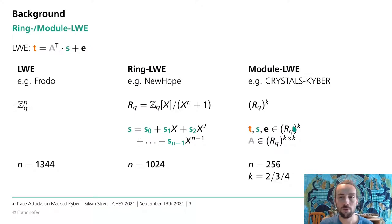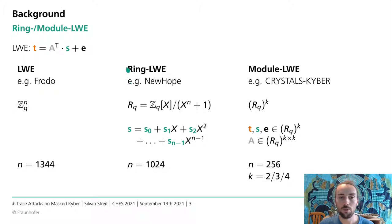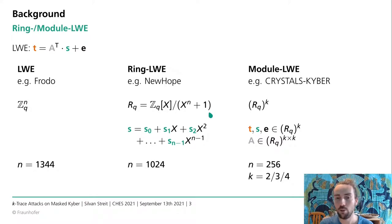This problem is used in a number of schemes — to highlight three: Frodo uses the ring over the integers modulus Q with a dimension N over 1000. New Hope uses ring LWE, where the ring is a polynomial ring, which allows for faster computation. The polynomials are up to degree 1024 and reduced with a reduction polynomial.